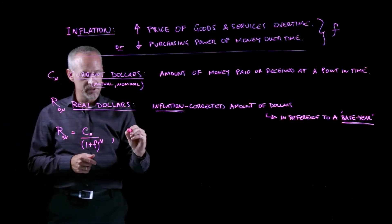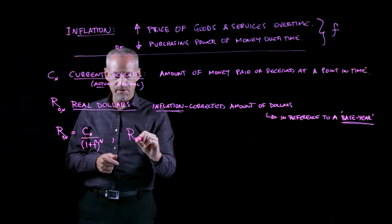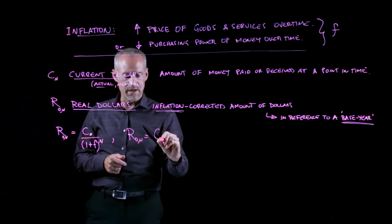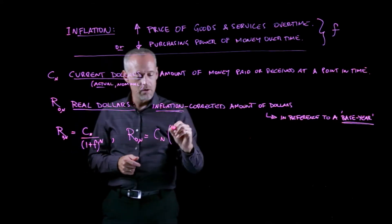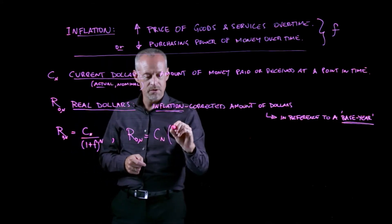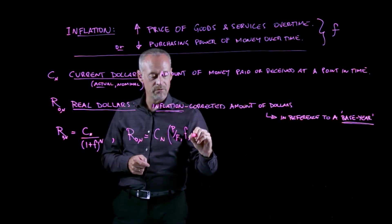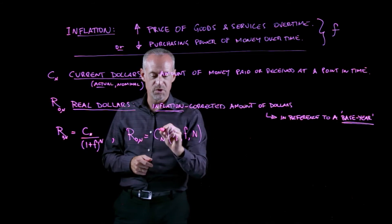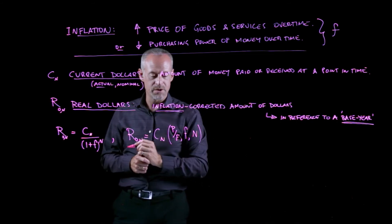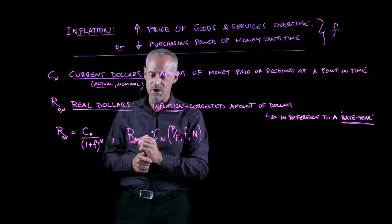You could also write this like this, where we can say we would take the current dollars times the P given F factor at the rate of inflation for the number of years between the current dollars and the real dollars year that becomes our base year.